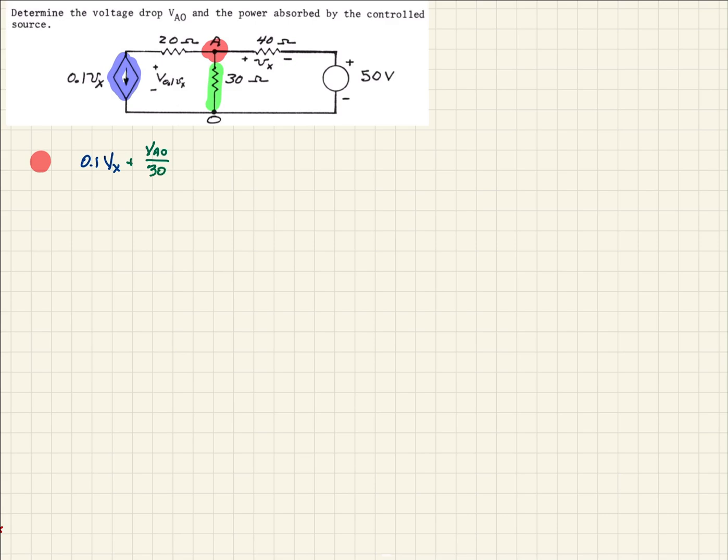And then if we come and look in this branch leaving that node, we need the difference in the voltages divided by the resistance. So that will be VA0 minus 50, so that's our voltage, and then over our resistance of 40 ohms. And then we should be able to set all of this equal to 0.